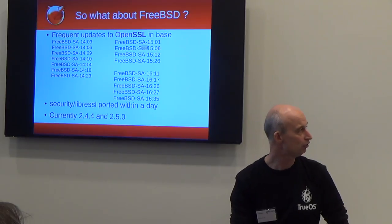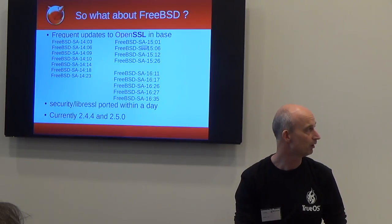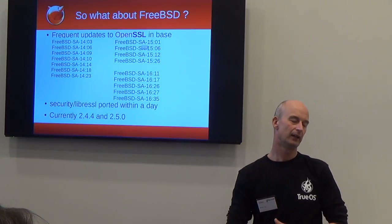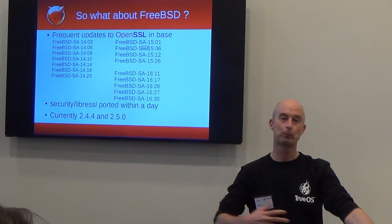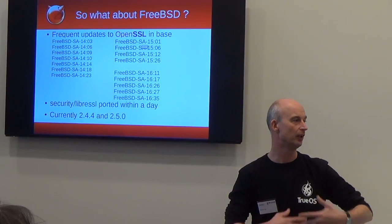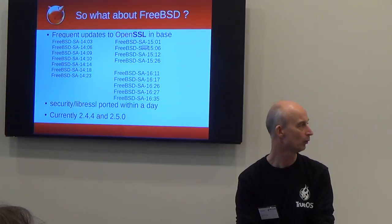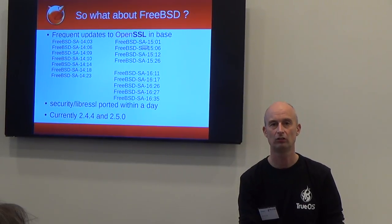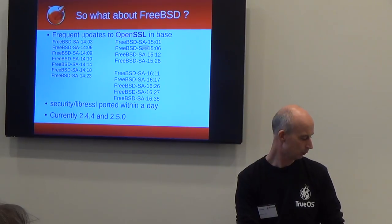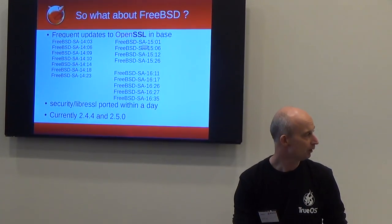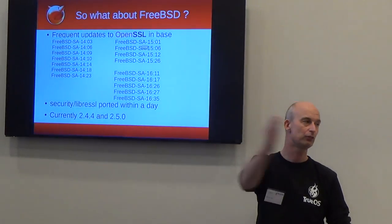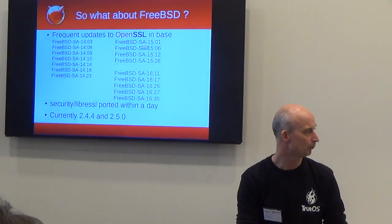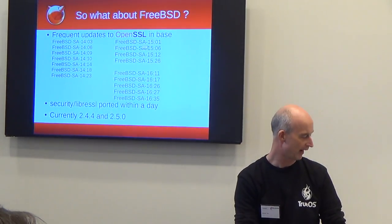FreeBSD has its own share of OpenSSL security advisories. LibreSSL was ported in a day - it was released and immediately available in our port tree. We're currently at version 2.4.4, released about a week and a half ago. There's also a development version coming with the next OpenBSD 6.1, which will use the LibreSSL 2.5 branch.